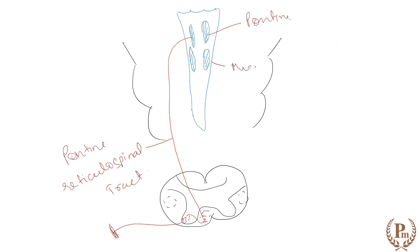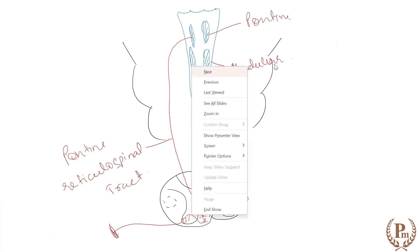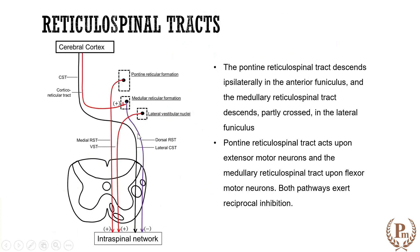This is the medullary area — the medullary reticular formation. These medullary fibers may come down and get crossed over, or some of them may come down ipsilaterally. They come to the dorsal side and to the lateral part of it, while the pontine comes to the anterior part. The pontine reticulospinal tract descends to the anterior funiculus or anterior white column of the spinal cord, whereas the medullary reticulospinal tract may partially cross over and descend to the lateral funiculus.